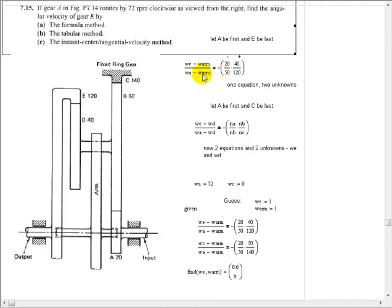And we notice that we do not know the speed of the arm. We do not know the speed of gear E. Two unknowns, one equation. We need another equation. And so I'm going to start at A and go straight through to C this time, from the point of view of the arm, with A being first.